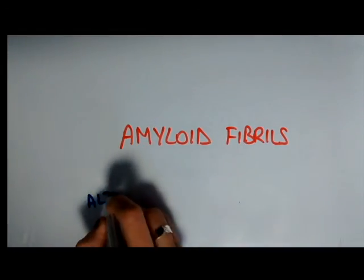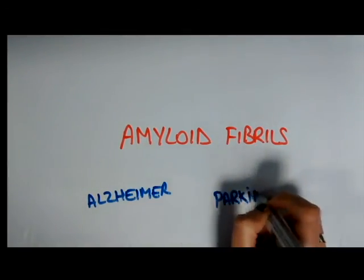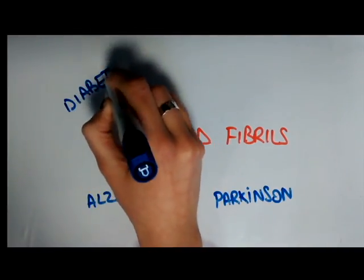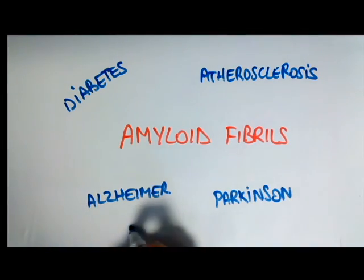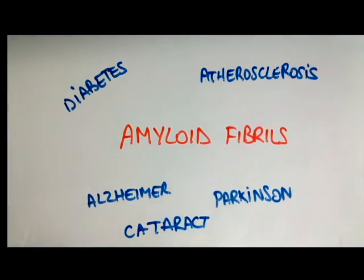The formation of amyloid fibrils is involved in many human diseases such as Alzheimer's, Parkinson's, type 2 diabetes, atherosclerosis, or cataract for instance. I guess too much of a good thing can really be a bad thing, right?